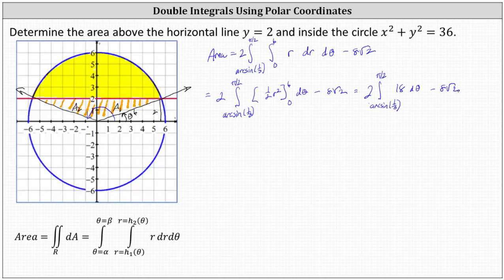Integrating with respect to theta, we have 18 theta. And when theta is equal to pi divided by two, we have 18 times pi divided by two. And then when theta is arc sine one third, we have minus 18 arc sine one third.